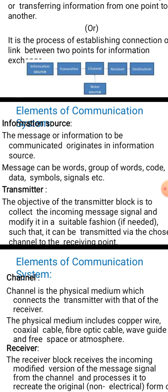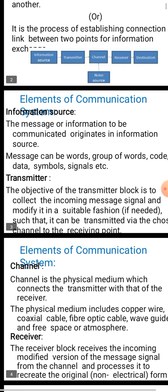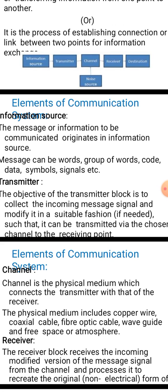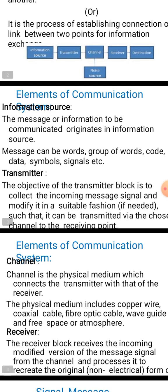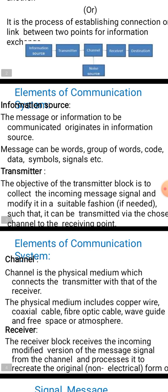In an analog communication system, the transmitter consists of baseband amplifiers or RF amplifiers and a modulator block. In a digital communication system, the transmitter additionally includes an analog-to-digital converter, an encoder, and a modulator.